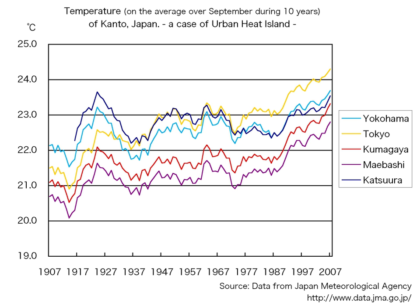Aside from effects on temperature, UHIs can produce secondary effects on local meteorology, including altering local wind patterns, the development of clouds and fog, humidity, and rates of precipitation. The extra heat provided by the UHI leads to greater upward motion, which can induce additional shower and thunderstorm activity. In addition, the UHI creates during the day a local low-pressure area where relatively moist air from rural surroundings converges, possibly leading to more favorable conditions for cloud formation.